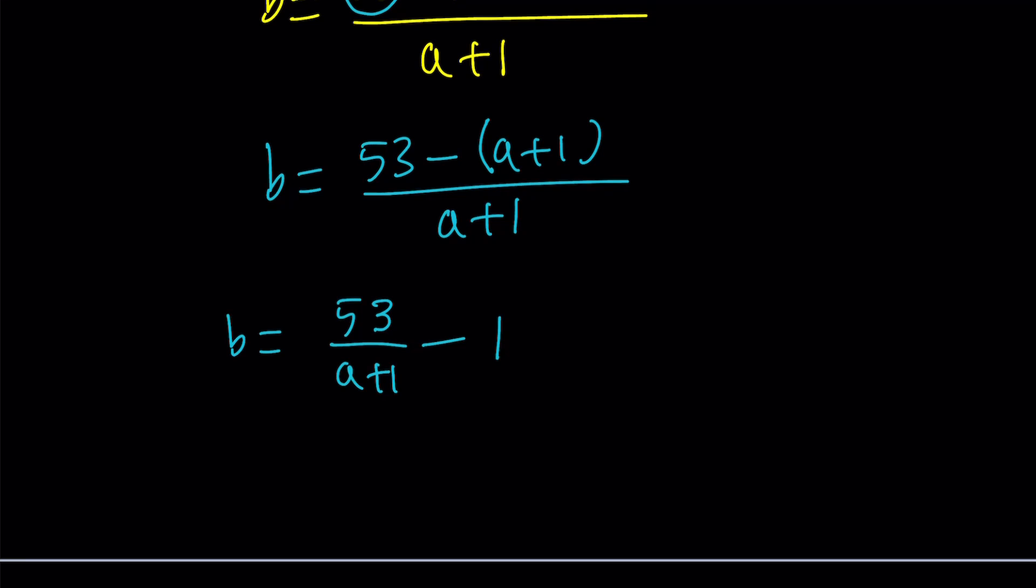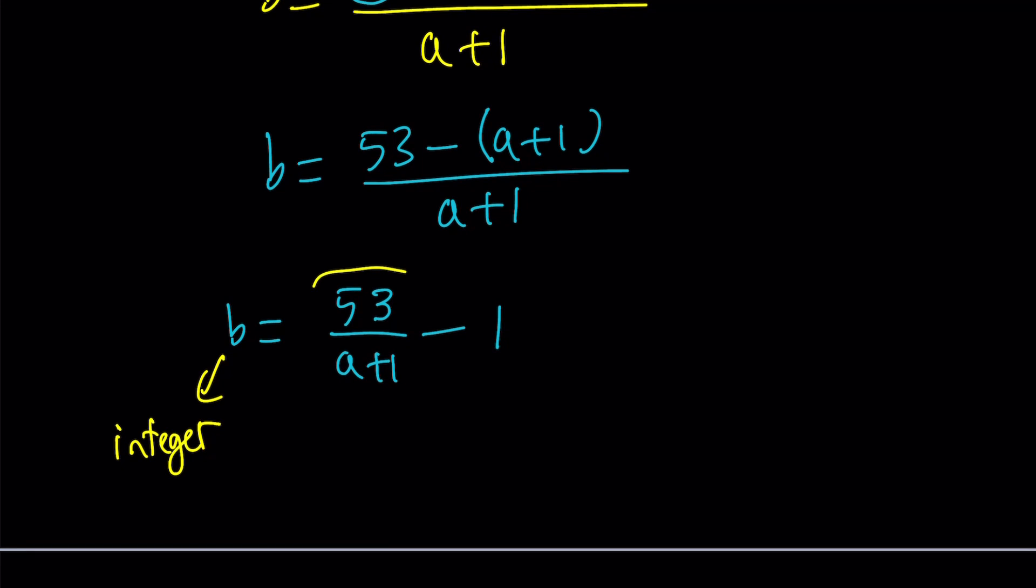Now, you have to think about the following. 53 divided by a plus 1 is an integer. Why? Because b is an integer. And since b is an integer, 53 over a plus 1 minus 1 needs to be an integer. So this needs to be an integer. What's that supposed to mean? It means that a plus 1 is a factor or divisor of 53. Of course, you have to consider all positives and negatives. So what are the options? How can a plus 1 be a factor of 53?